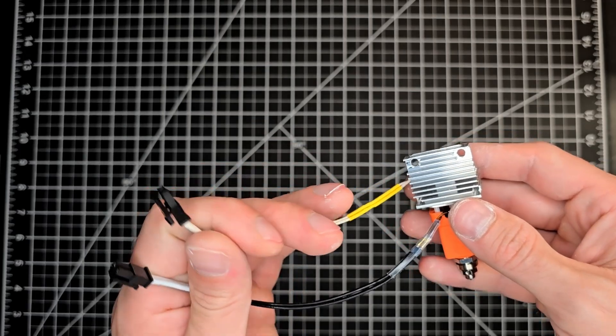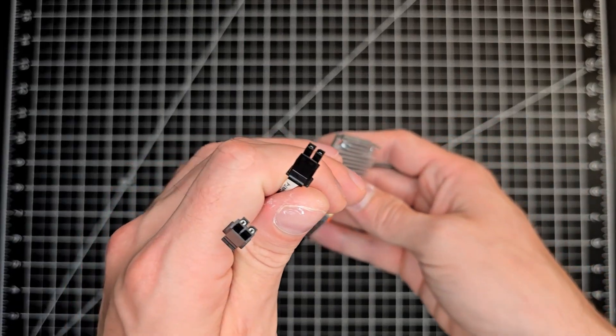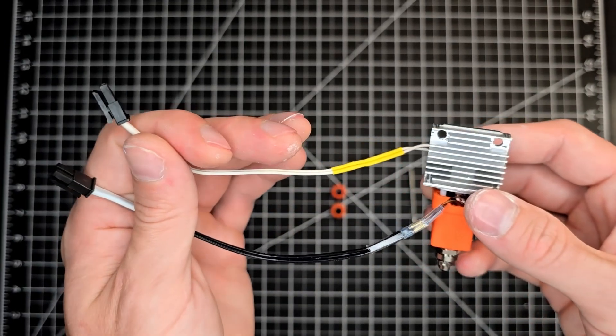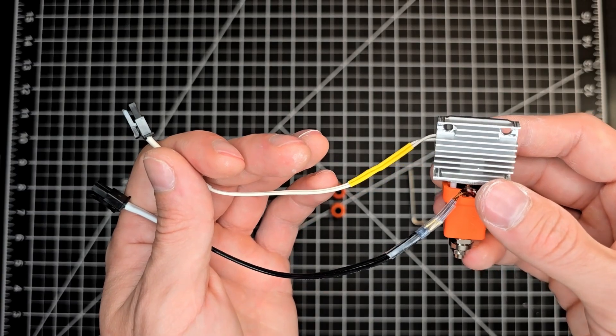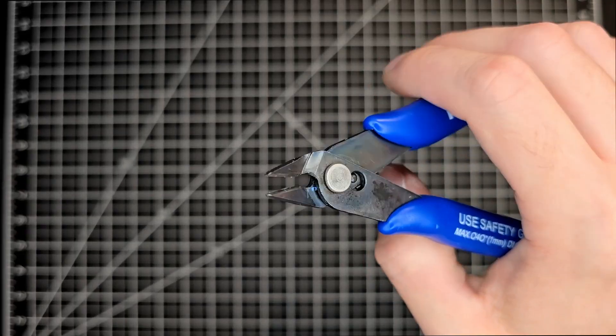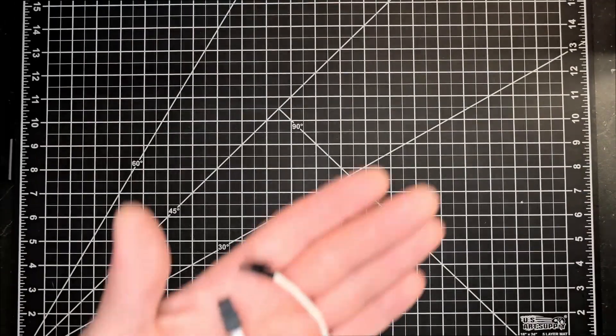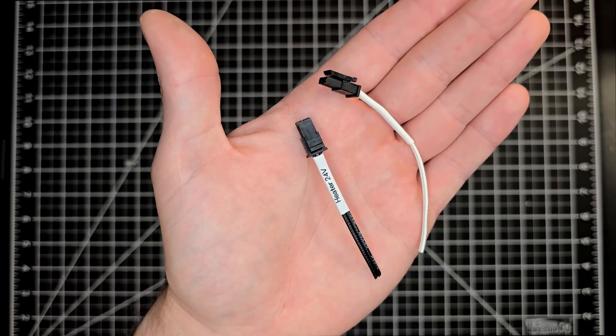And as previously discussed, the connectors on the heater and thermistor wires will not work with the printhead board, so it's time to take care of that. And with a quick snip at a calculated length, we're ready to re-terminate with JST connectors.